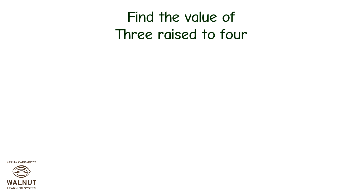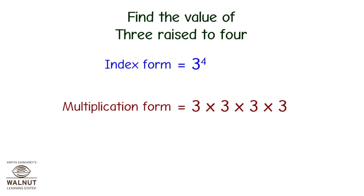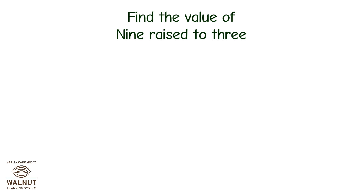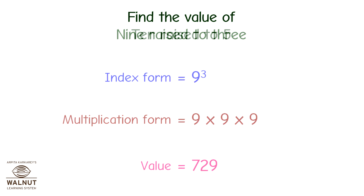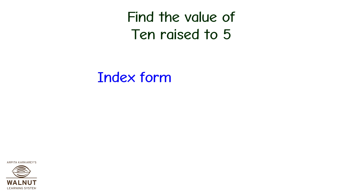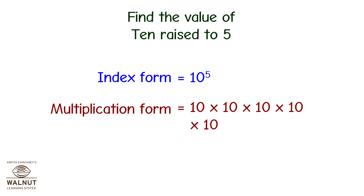Find the value of 3 raised to 4: index form is 3 raised to 4, multiplication form is 3×3×3×3, value is 81. Find the value of 9 raised to 3: multiplication form is 9×9×9, value is 729. Find the value of 10 raised to 5: multiplication form is 10×10×10×10×10, value is 1 lakh (100,000).